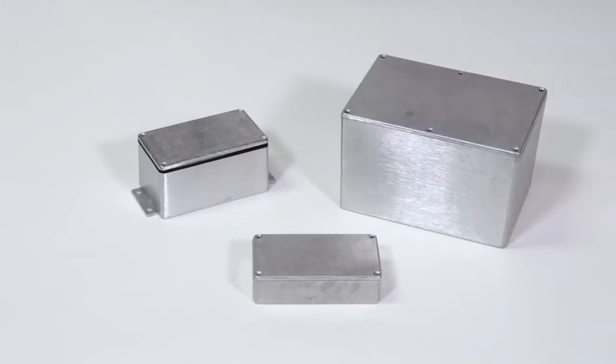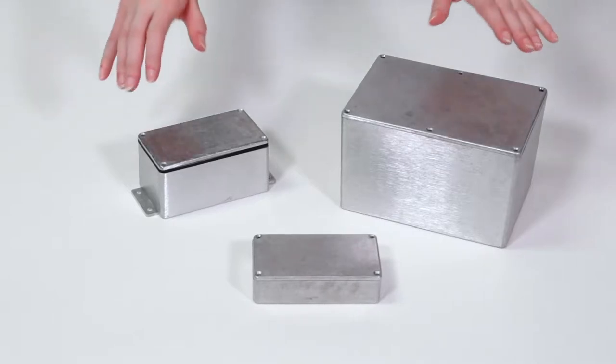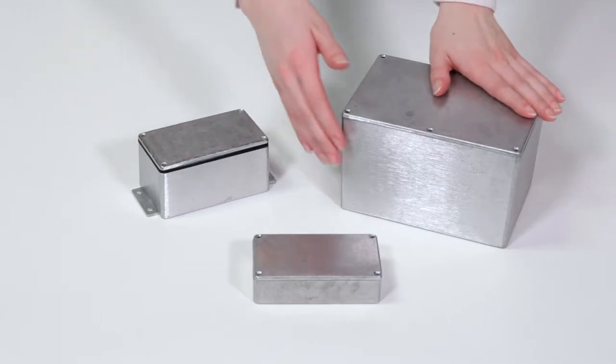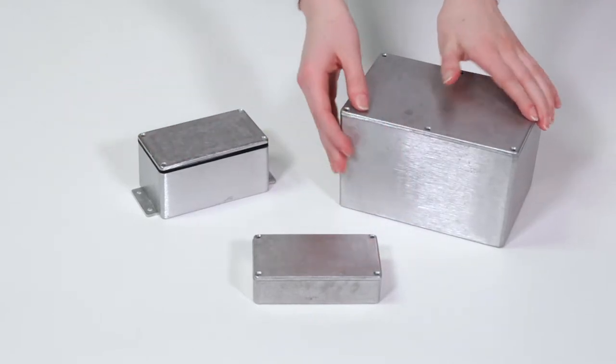This video is for Bud's CN series of die cast aluminum enclosures. These affordable and sturdy boxes are made from durable ADC12 aluminum alloy.